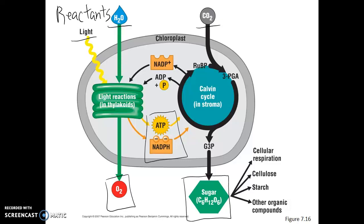So water and carbon dioxide go into photosynthesis, and oxygen gas and sugar come out. Water specifically goes into the light reactions and out comes oxygen gas and the chemical energy. CO2 and the chemical energy go into the Calvin cycle and out comes glucose — an organic molecule that is also very energy rich. This sugar molecule can now be stored and used later by the plant, or also by animals which consume that plant.